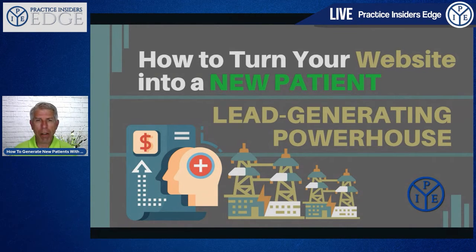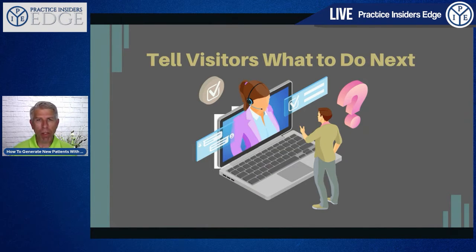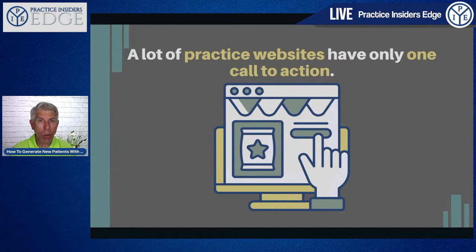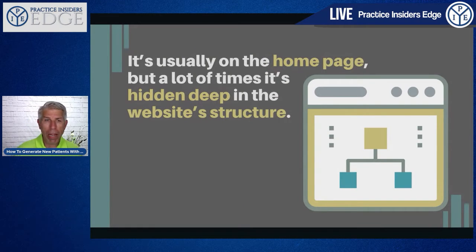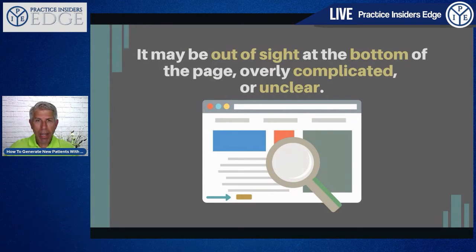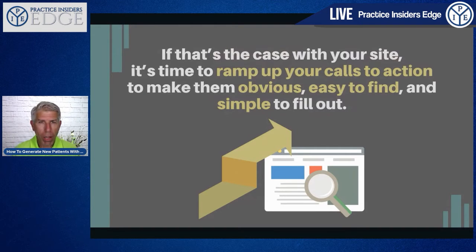How to turn your website into a new patient lead generating powerhouse. The next step is to tell your visitors what to do next. A lot of practices have only one call to action — that's a huge mistake. You can have a chat widget on the bottom of the site that says 'do you have a question? Text us.' It's usually one on the homepage, but often hidden deep in the website structure. You want your call to action on the front end, above the fold — anything you see on your computer screen above the bottom line. Your call to action needs to be at the very top or bottom of that visible portion.